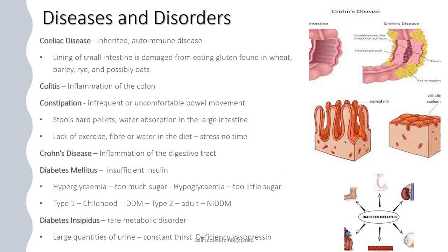Coeliac disease is an inherited autoimmune disease affecting the lining of the small intestine, caused by damage from eating gluten or other proteins found in wheat, barley, rye and possibly oats. It's quite a serious condition and people need to follow a strict diet throughout their lives to avoid symptoms.